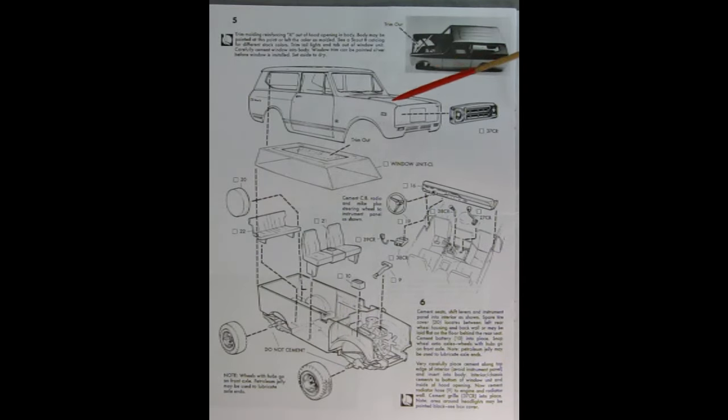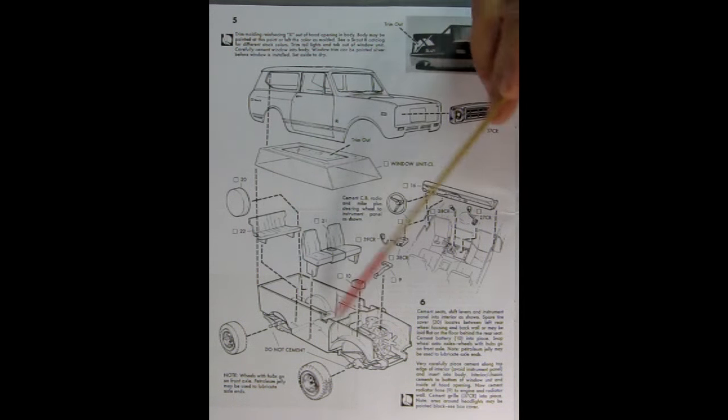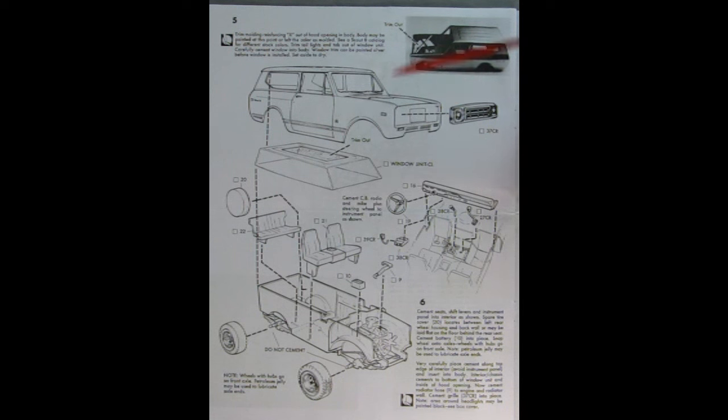Panel five shows our body and glass and interior all going together, as well as the front grille. So here it shows to trim out this cross in the molded plastic body before you begin. Then we've got our body, our windshield. Here's the interior. We've got our spare tire being glued in place, as well as the back bench seat and the front buckets with the center console. Then in the engine bay, we have our battery and this upper radiator hose. Here we've got a two-piece CB radio going into the interior.